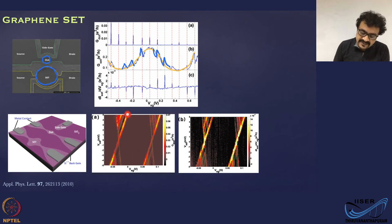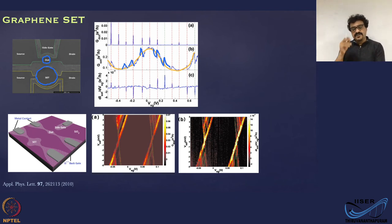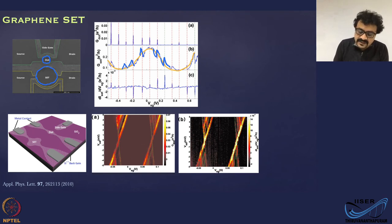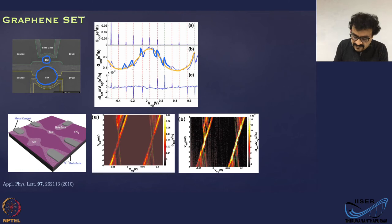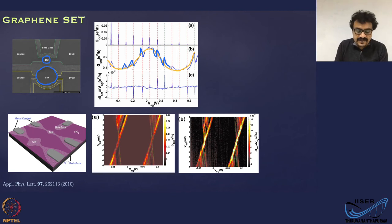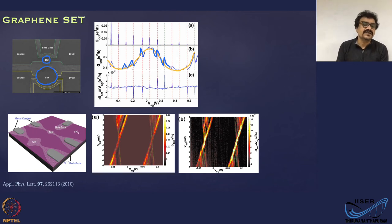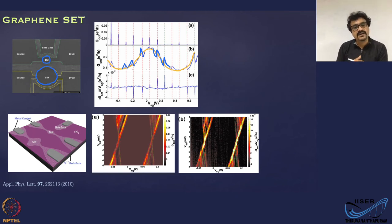The SET captures almost all the charging events. The Coulomb diamond plot from direct transport measurement of the graphene quantum dot is shown, and the same plot with changes in the SET conductance recorded shows that all the features seen in direct measurement can be extracted with higher clarity using the charge sensor. This is an example where a semi-metal SET is used to detect charging and discharging events in a graphene quantum dot.